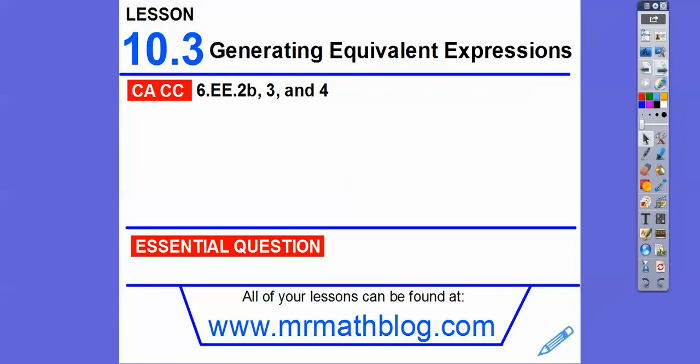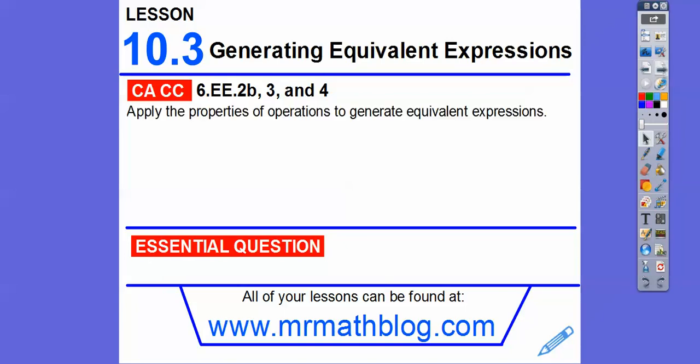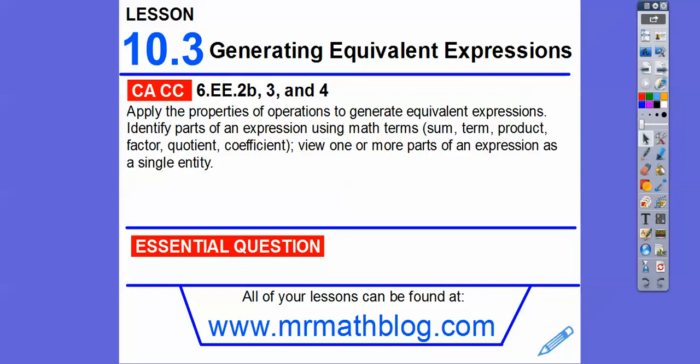Our common core strand is right here. One of them is applying the properties of operation to generate equivalent expressions. Then identify parts of an expression using math terms like sum, term, product, factor, quotient, coefficient. We'll do all of that.